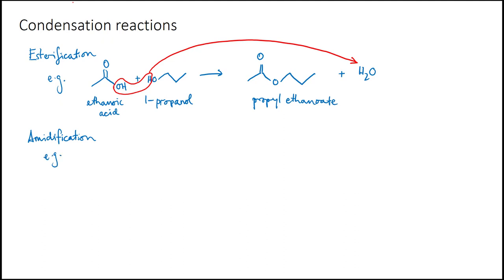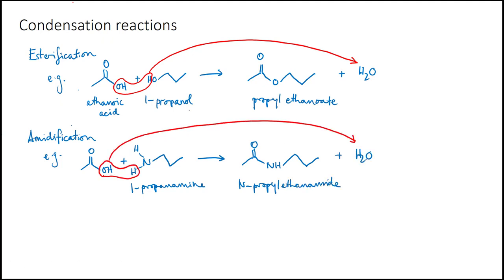Amidification is similar but the reactants are a carboxylic acid, say ethanoic acid again, and an amine, say 1-propanamine. Water is still produced as a byproduct but the main product here is an amide, n-propylethanamide. However it's worth noting that the carboxylic acid is an acid and amines are bases. So when you try to do this reaction you get a competing acid-base reaction where the amine just takes a proton from the acid. So in practice, in the lab, it's often easier to make an amide by starting from an acyl chloride.